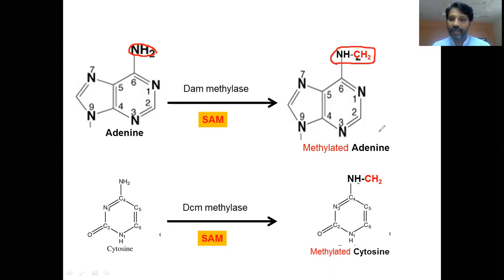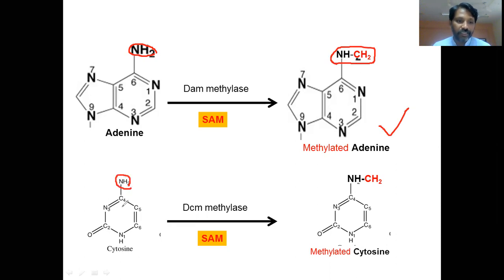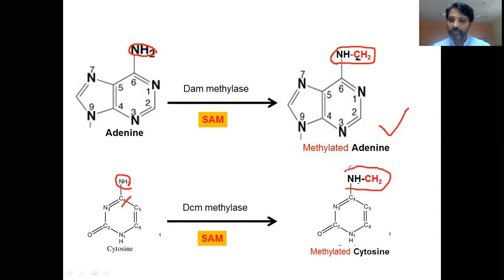Whereas DCM methylases methylate the amino group at the C-4 position of cytosine. The C-4 amino group is methylated, producing a methylated cytosine. So DAM methylases methylate the amino group at C-6 position of adenine.